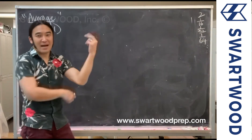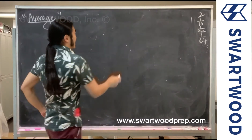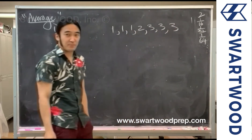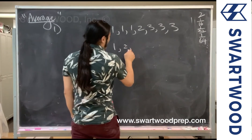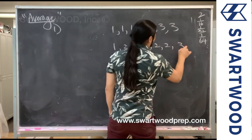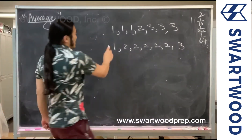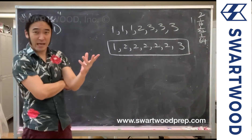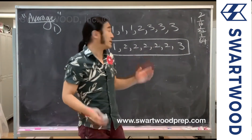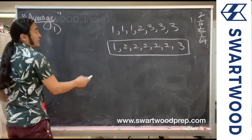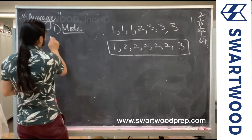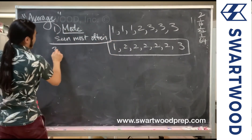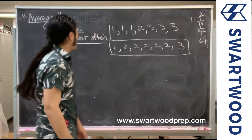You get a bunch of people, ask them how many pounds of gummy bears they eat per day, and you get numbers that look like this: one pound, one pound, one pound, two pounds, three pounds, three pounds, three pounds, three pounds. Well, you look at these numbers and think the average person eats about two pounds, right? It seems like a lot of people are eating two pounds per day. You look at the value you see most often — and that's called the mode. That's one way to figure out what the average is.